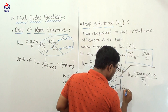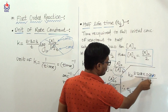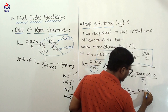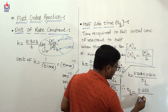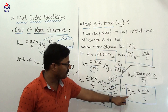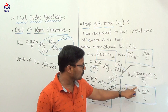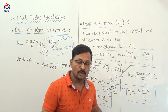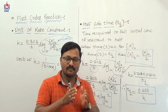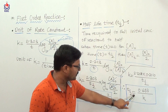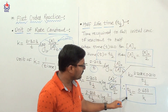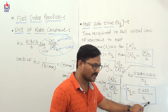Therefore, t one-half is equal to 2.303 multiplied by 0.3010 (since log 2 = 0.3010), divided by k. This gives us 0.693 upon k. So t one-half, the half-life time, is equal to 0.693 upon k. This is the formula for the half-life time of a first order reaction.